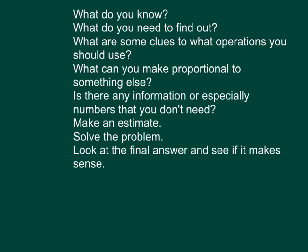Here are some questions to ask yourself when solving these problems — they'll help you convert words into numbers, symbols, and variables. First, what do you know? They give you information and you need to figure out what's important. Second, what do you need to find out? They're usually asking for one main thing, sometimes more, but those will be related. Third, what are some clues about what operations to use? Sometimes you get verbal cues — if there's a price involved, you're probably multiplying quantity times cost per item. A word like 'discount' signals subtraction.